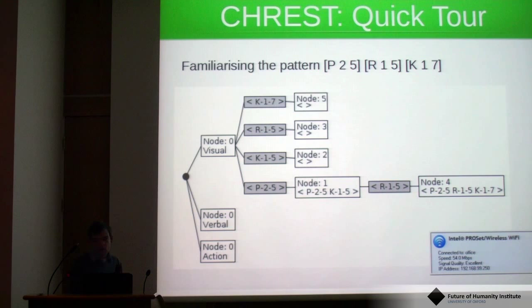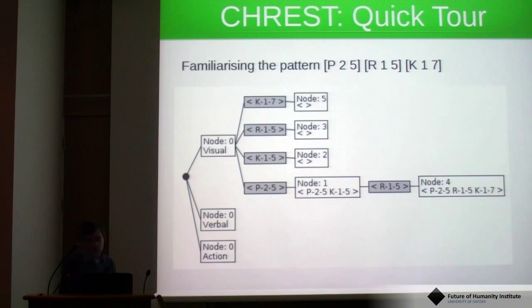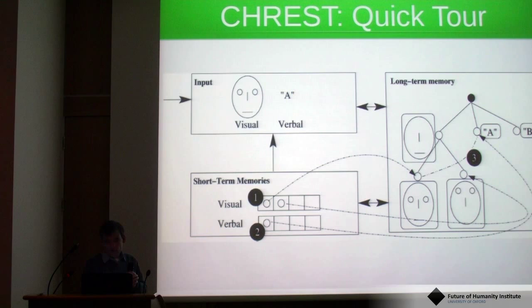Most of the effects of CREST are due to the properties of this network — when you pass in patterns, what kinds of patterns do you get out? That's the straightforward indexing. It's also possible for CREST to learn links between nodes in the network, and this process is mediated by the short-term memories.